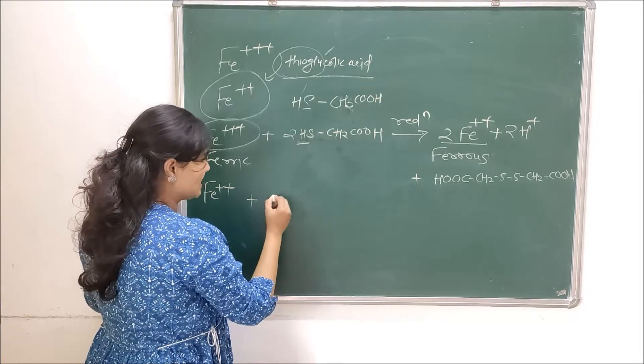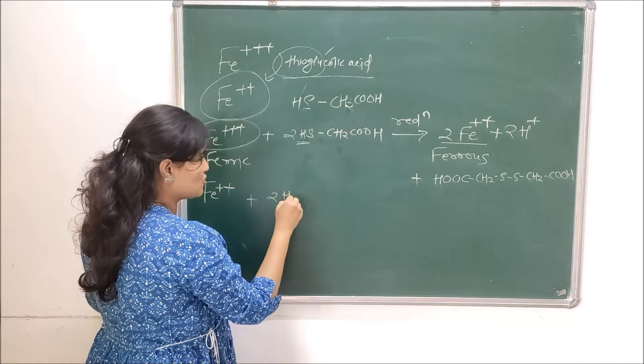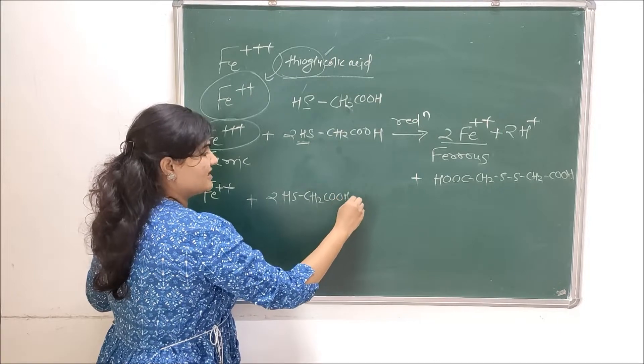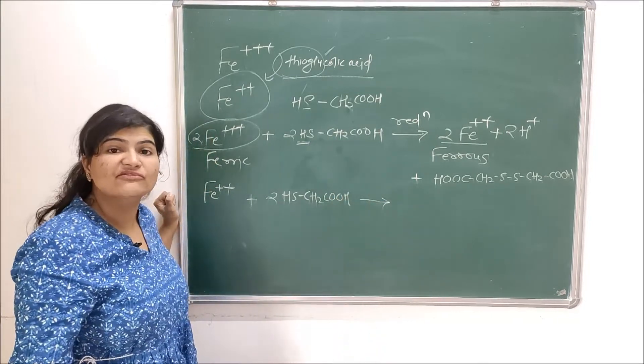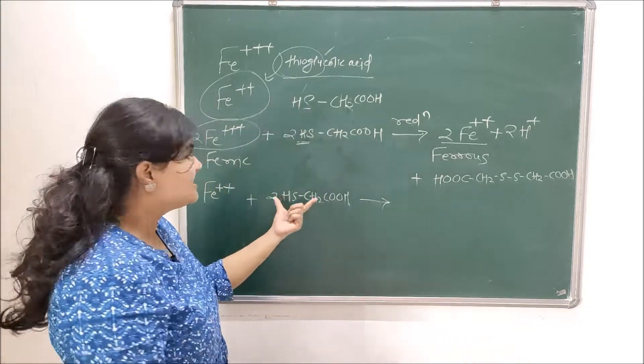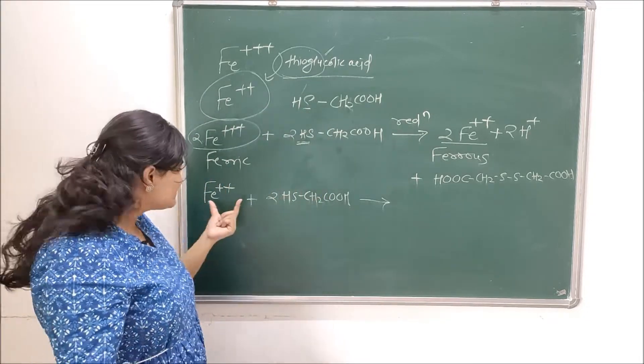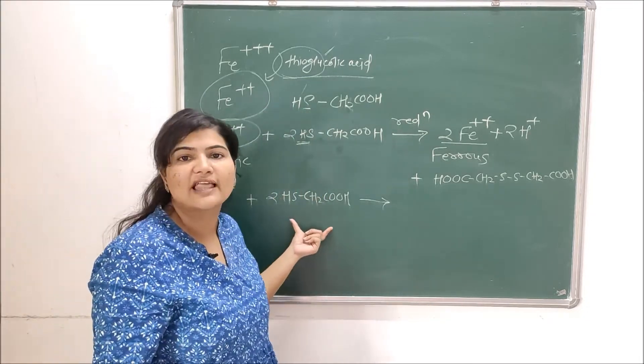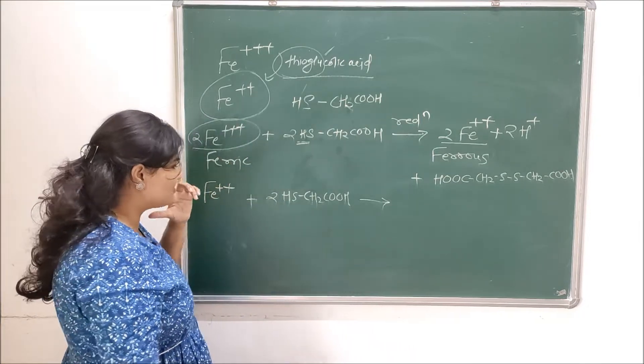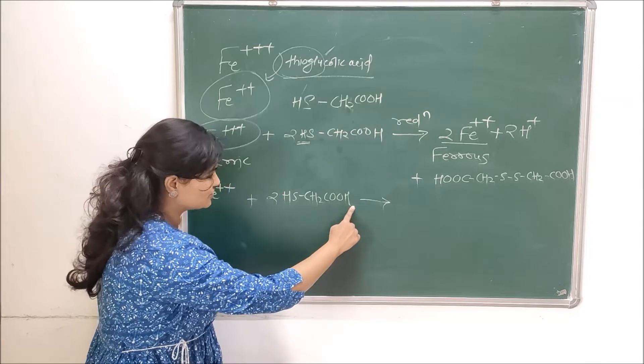Now you have converted those to ferrous, so now your ferrous ions will again react with your thioglycolic acid. So I'll take two moles of thioglycolic acid here. Now what they are going to do is they are going to form a coordination compound, a complex with the thioglycolic acid, and it will be called ferrous thioglycolic complex.